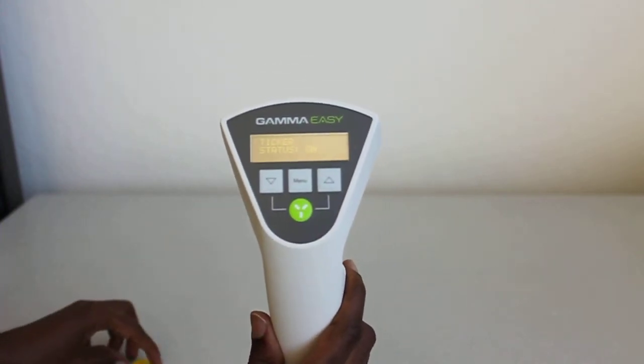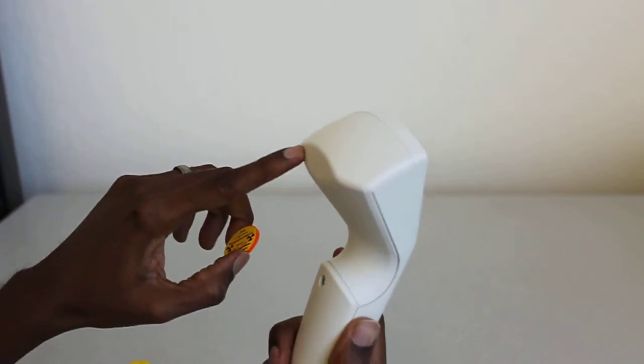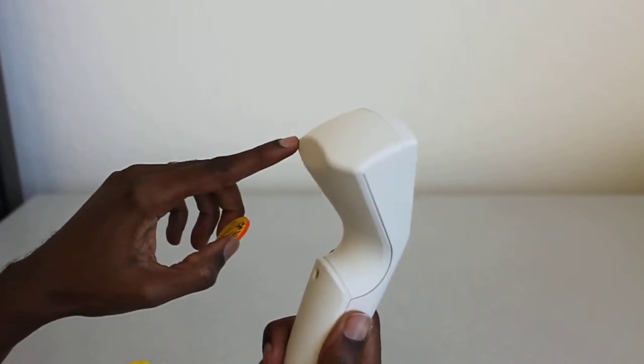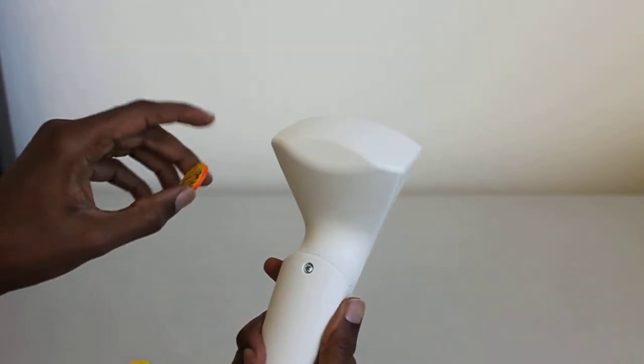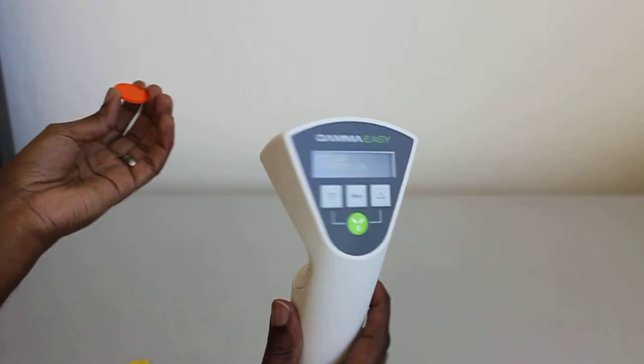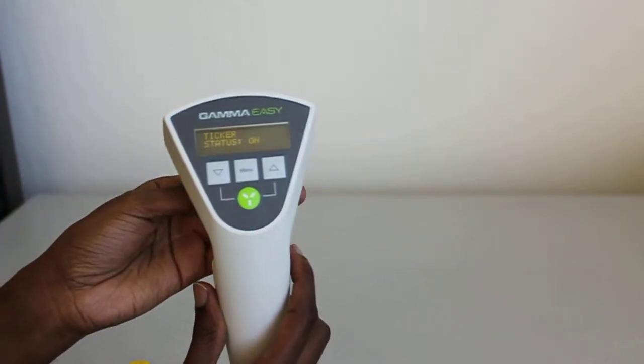And let's see what it does with the Cobalt-60 source. So the sensor is actually in the middle here. I think it's sitting horizontally across this way. So if we place the gamma source pretty much anywhere, because it goes through plastic material pretty easily, then we should see the measurements shoot up.